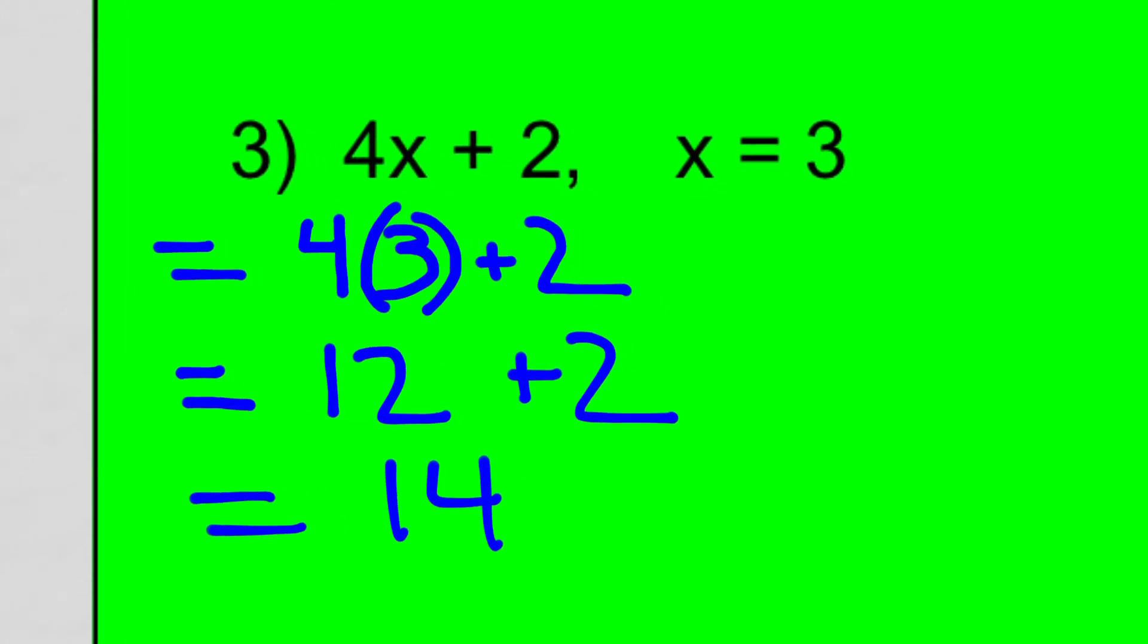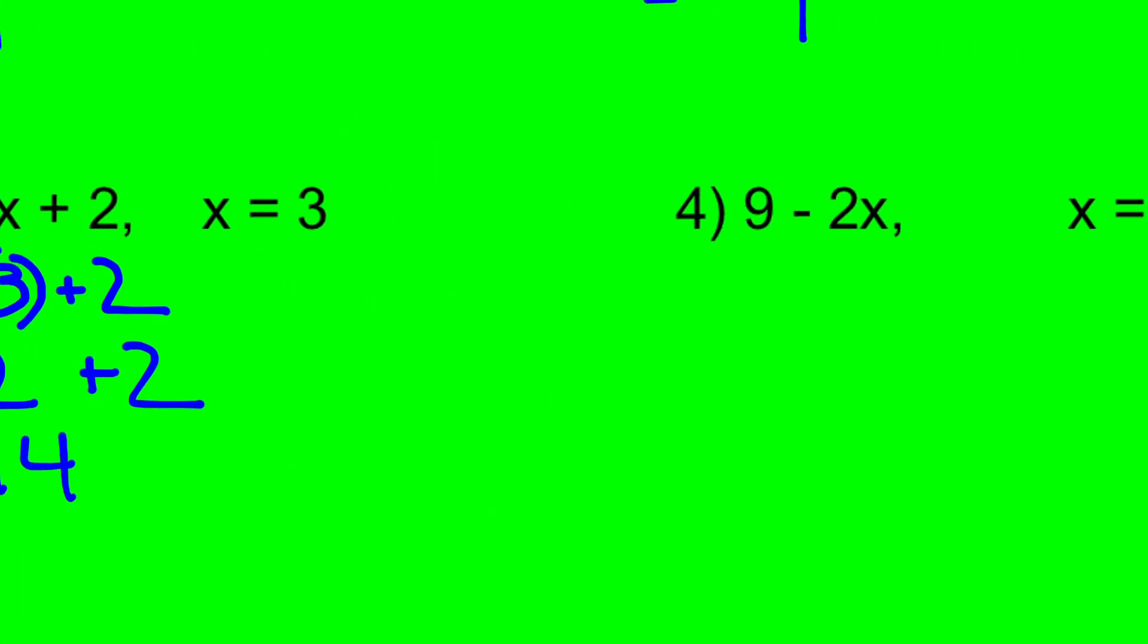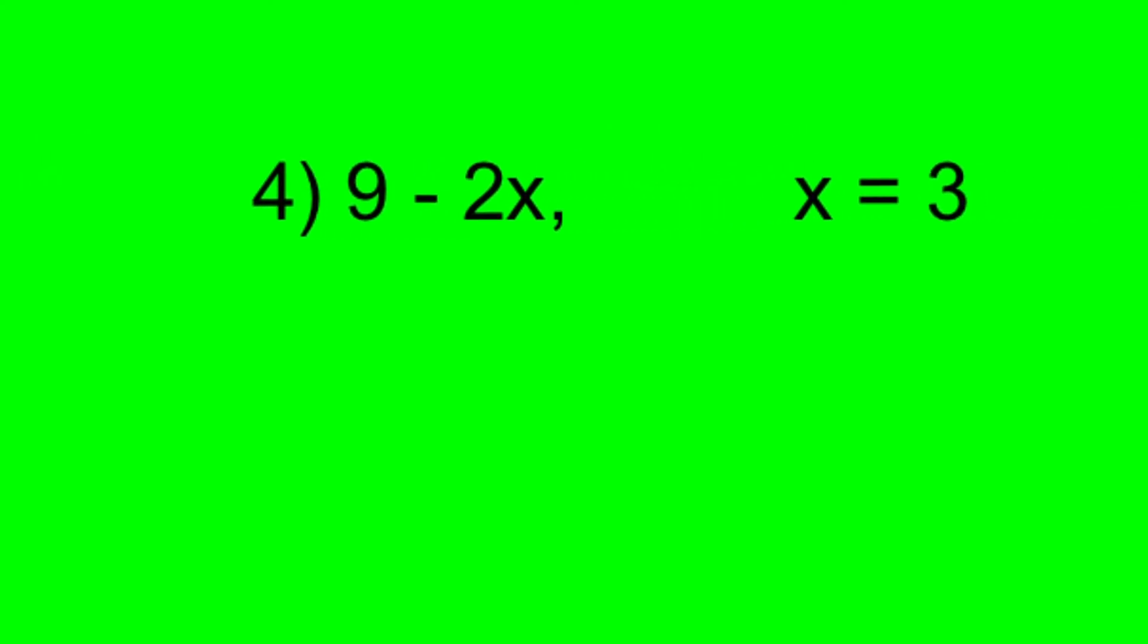Okay, so that's an expression where we had to do two number operations, and we always do the multiply before the addition. Okay, number 4. 9 - 2x, and in this case, x is equal to 3.